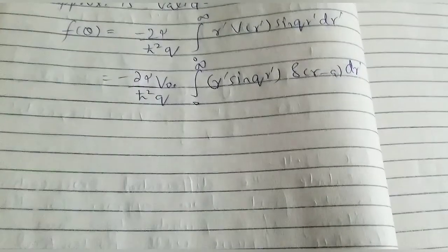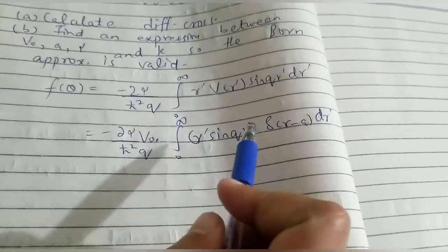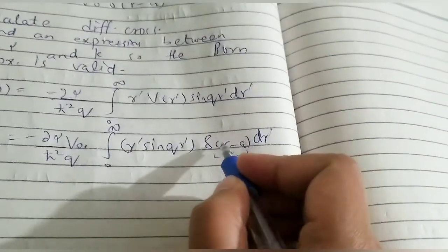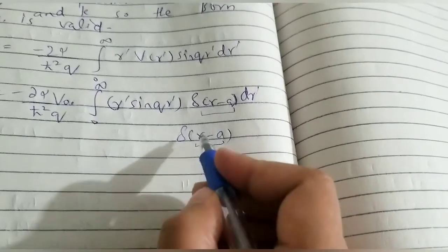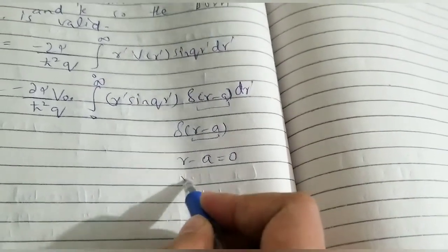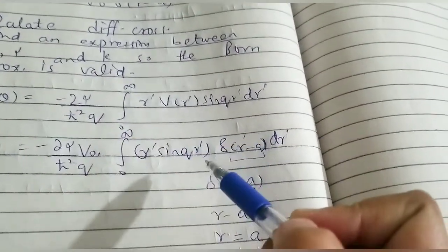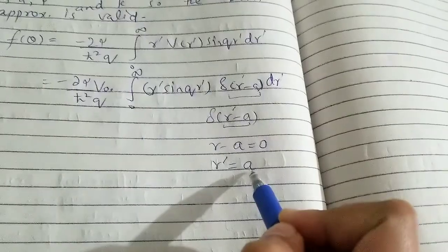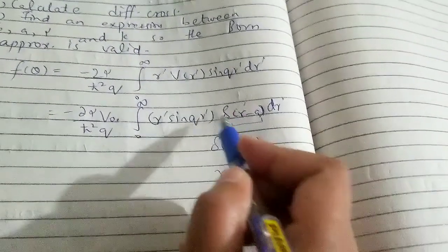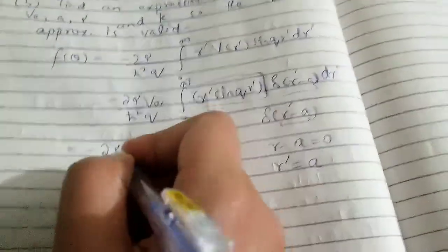For integrals involving delta functions, the property is: for any integration limits, if the delta function delta(r-prime minus a) is present inside the integral, you set r-prime minus a equal to zero, which gives r-prime equals a. The value of the integral is then equal to the value of the remaining function evaluated at r-prime equals a. So the integration gives us a times sine(qa).